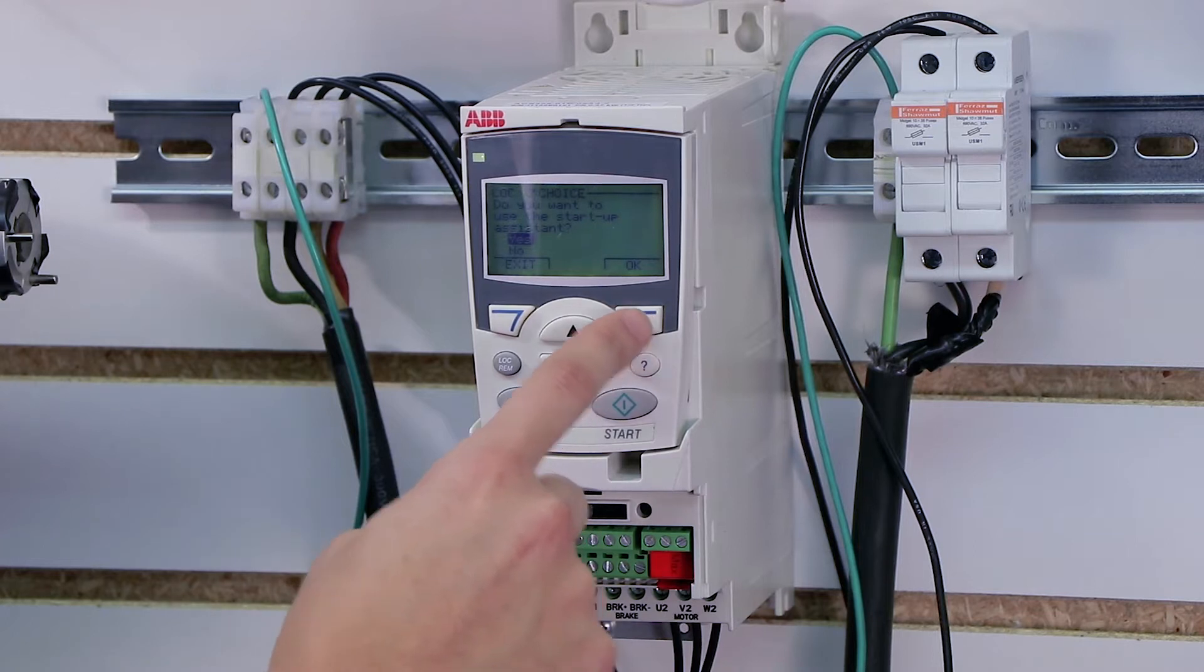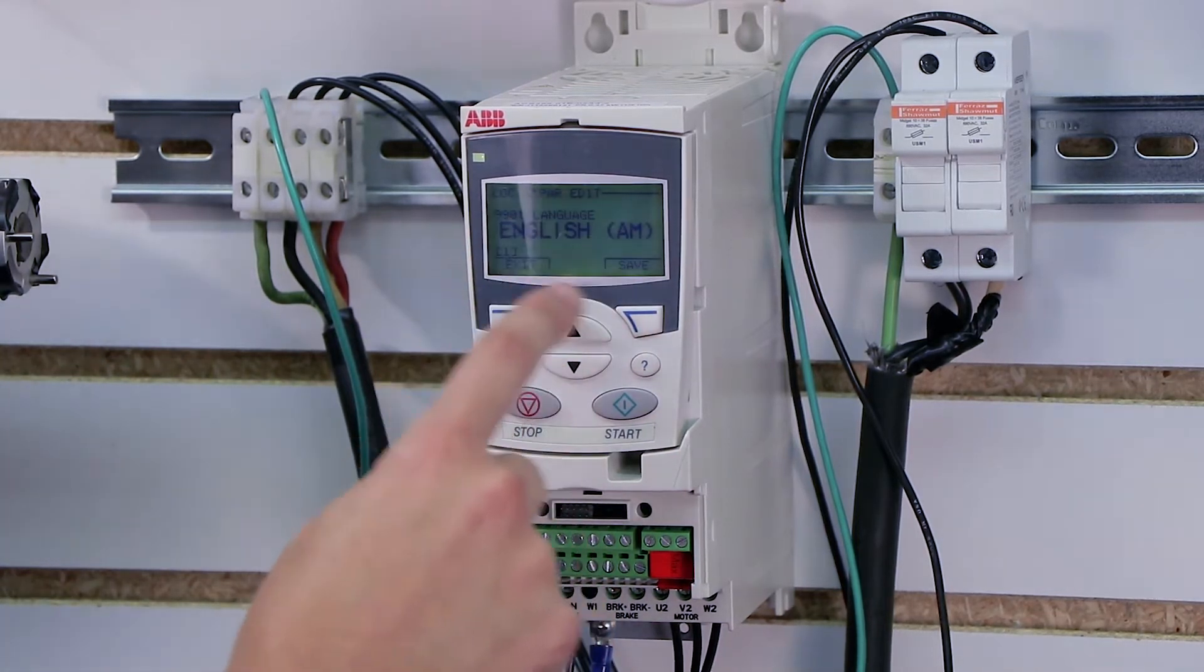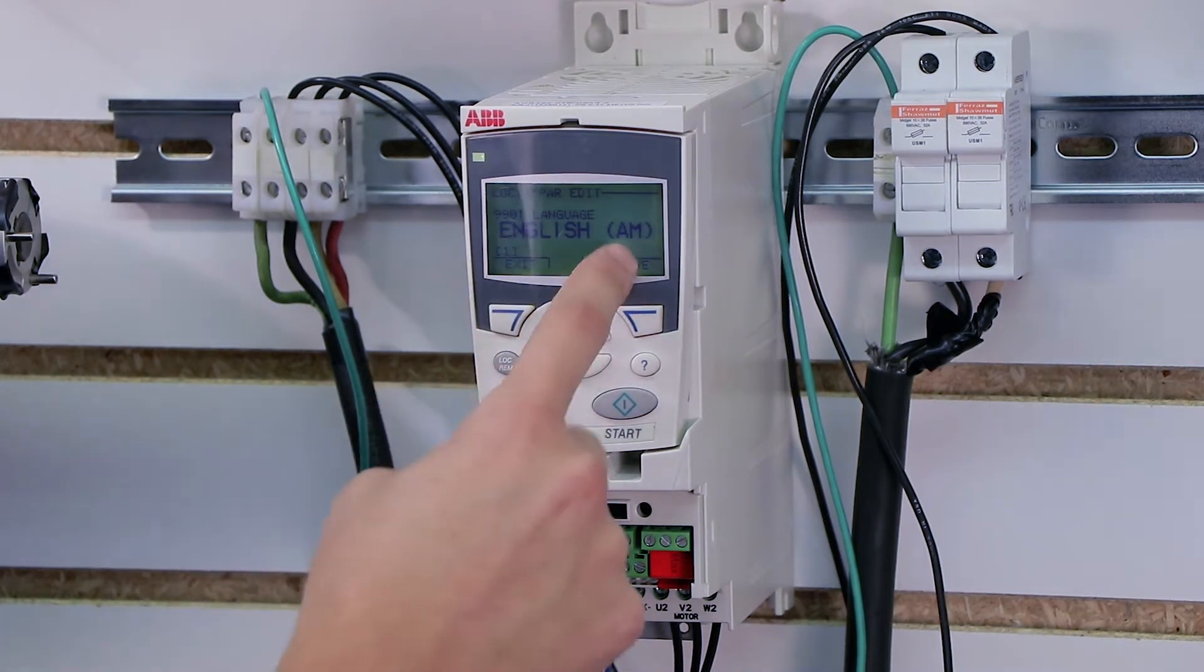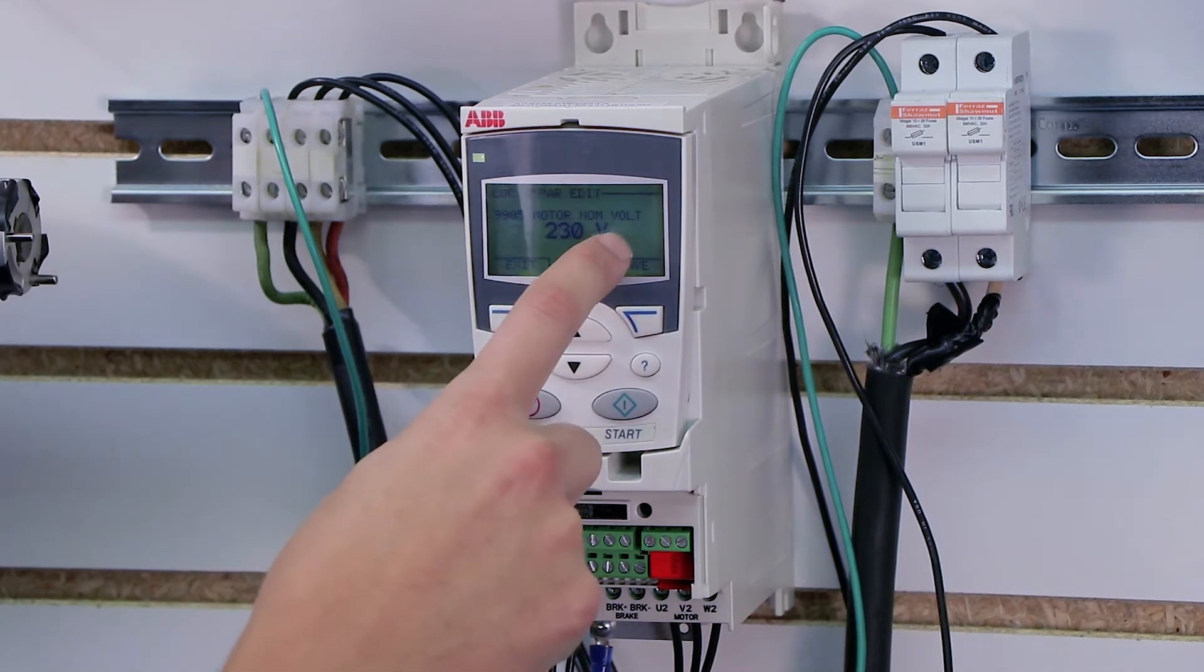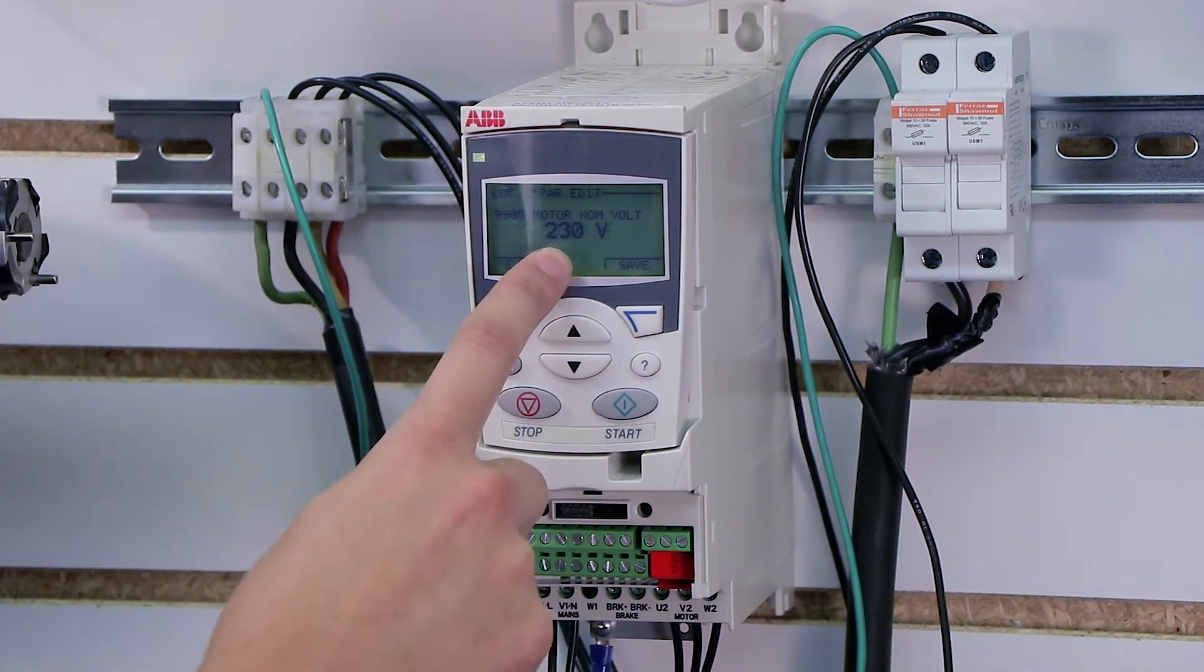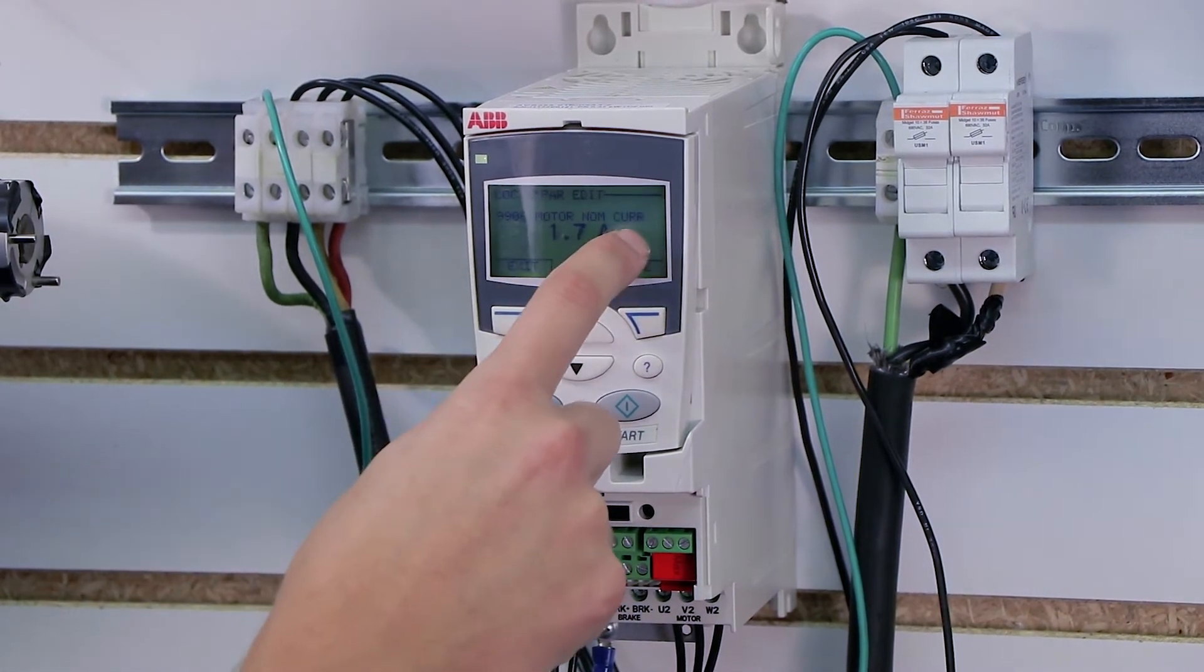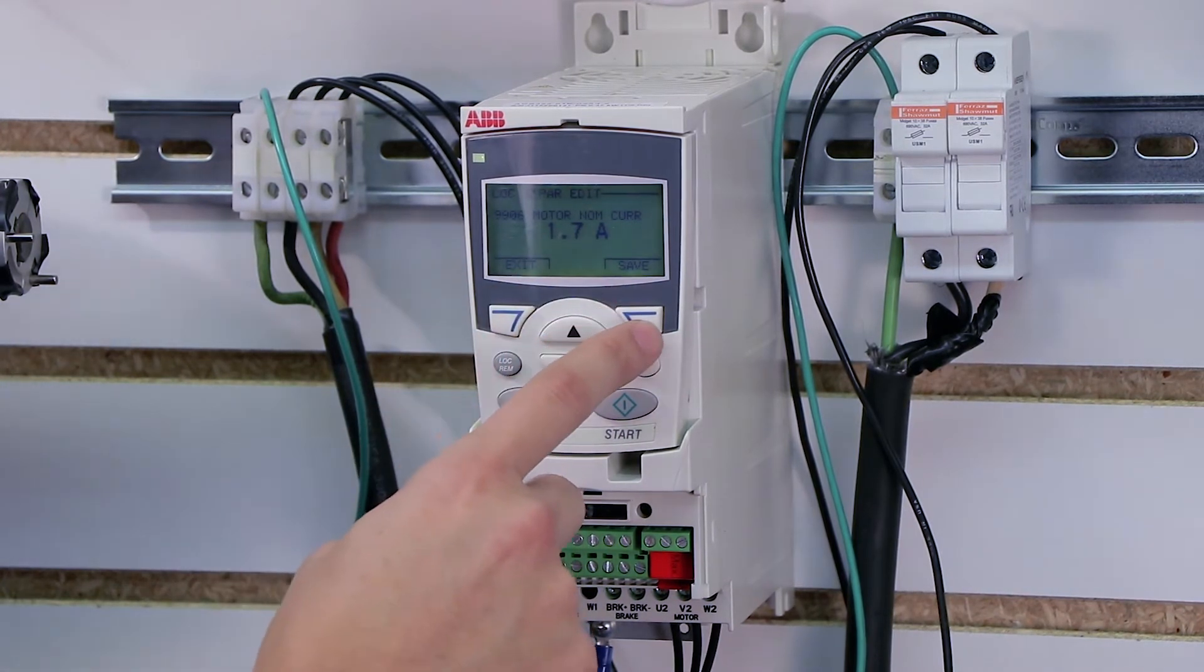And then there's a startup assistant right at the top, and I'm going to press select. It's going to ask me if I want to use the startup assistant, I'm going to say yes, and this is going to walk us through all of the parameters for our basic start-stop. Now for me, obviously, I'm going to choose English as my primary language. The motor nominal voltage, this will be on the nameplate of your motor. Mine is 230 volts. The motor nominal current is also on the nameplate of my motor, and my motor runs 1.7 amps at 230 volts.